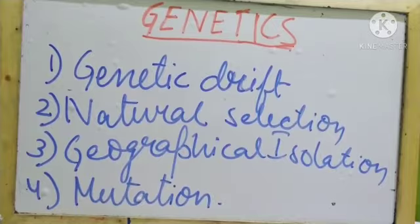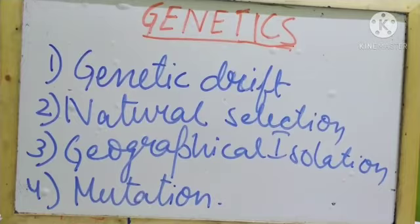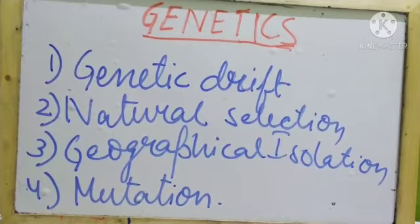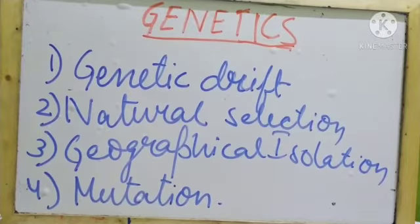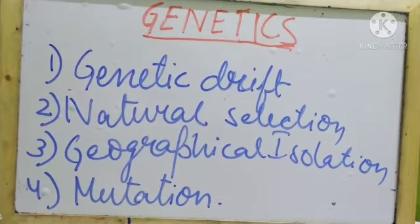Now let me tell you about genetic drift — the elimination of the genes of certain traits. When a section of a species population migrates or dies due to natural calamity, it alters the gene frequency of the remaining population. Whenever there is a gap between generations due to natural calamities — death or migration — there is some obstruction created in the gene flow, and this creates genetic drift.